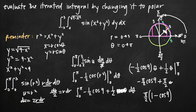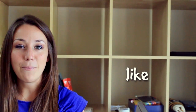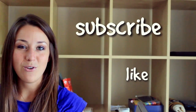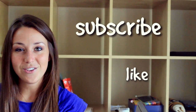This gives us the value of the integral over the upper half circle, found by converting the given iterated integral to polar coordinates. I hope you found that video helpful. If you did, like the video below and subscribe to be notified of future videos.